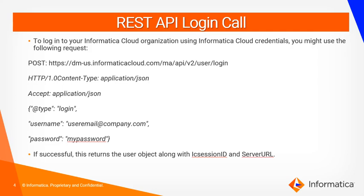To login to your Informatica Cloud organization, you will need the Informatica Cloud credentials. Once you have the credentials, you can make use of the request shown on screen to make the initial login call. You will have to make a POST request to the master URL. You can pass the IACS user credentials in the raw body section. If the request is successful, it would return a response and we would need to capture the IC session ID and server URL from the response.